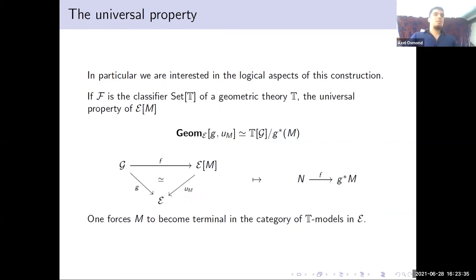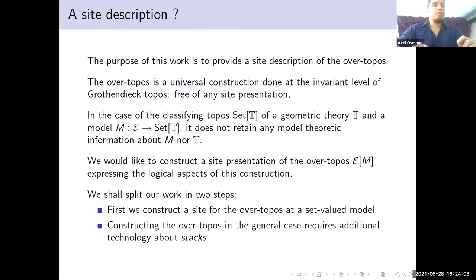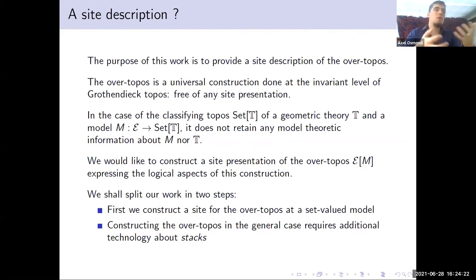In particular, in the case where this geometric morphism is the name of a model of a geometric theory — that is, if our topos is the classifying topos of a geometric theory — then the universal property of the overtopos is that it classifies homomorphisms of T-models into the inverse image of this model along arbitrary geometric morphisms. The purpose of this talk is to provide a site description of this construction of the overtopos, since as an abstract universal construction it does not retain information about the site, the syntactic properties encoded in the model structure, or the structure of the classifying topos. So we want to provide a canonical site for this construction.